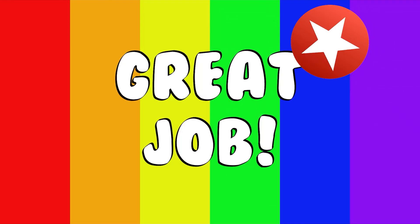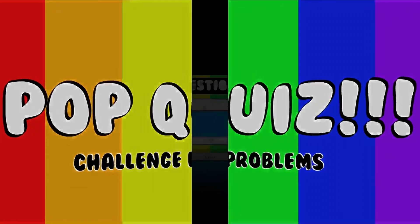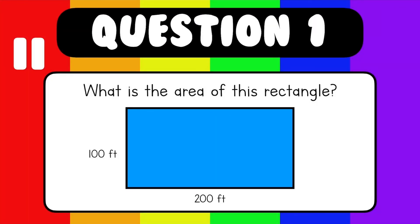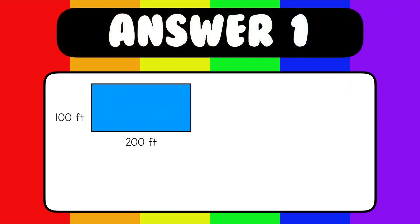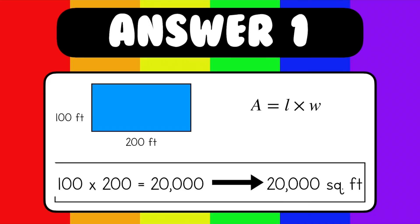Now you know how to find the area of rectangles, squares, and triangles. But before you go, we have a pop quiz with some extra challenge problems. Are you up for the challenge? Question 1: what is the area of this rectangle right here? Don't forget to pause before I reveal the answer. You might recognize this rectangle — it was in the beginning of this video when we couldn't solve it because it was too big to draw in every square foot. We now have a formula, so it's not too difficult. We just multiply 100 by 200 to get 20,000. Since our rectangle is in feet, our answer should be in square feet, giving us a final answer of 20,000 square feet. Aren't you glad we have a super simple formula instead of having to draw in each square foot?